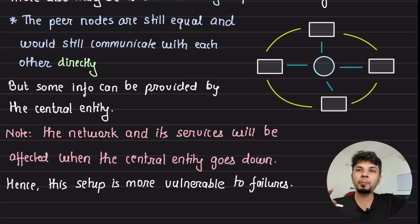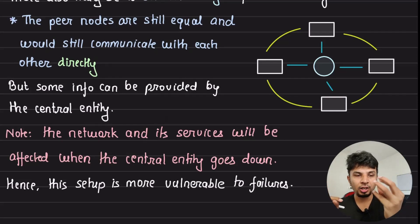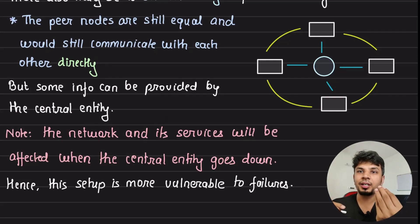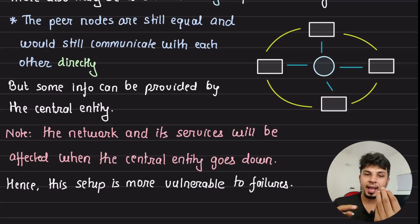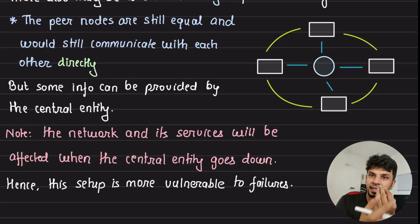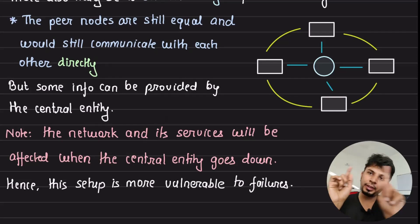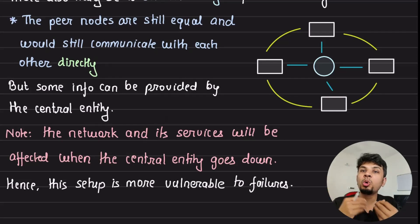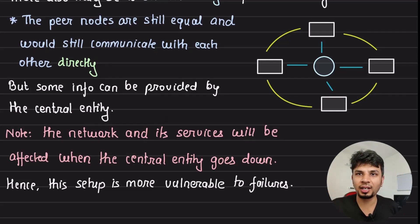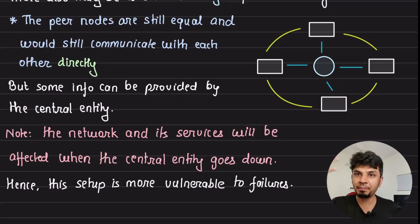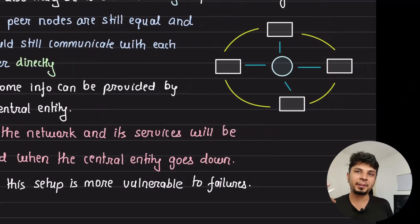BitTorrent is not a pure P2P network. BitTorrent has a central entity called a tracker, and the peers participating in the network talk to each other. But to understand whom to talk to, they talk to the central entity, which is called a tracker. We'll dive deeper into the tracker and implementing it throughout the series.